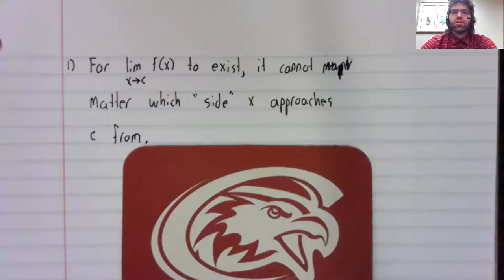Reason one: for a limit as X approaches C to exist, it should not matter which side of C X is approaching it from.